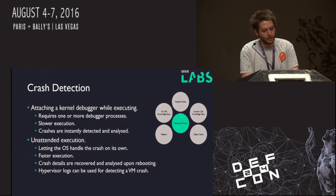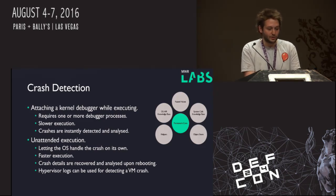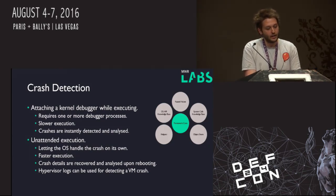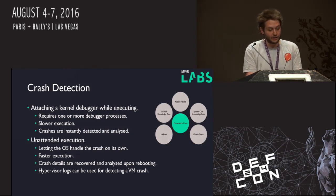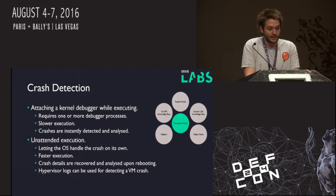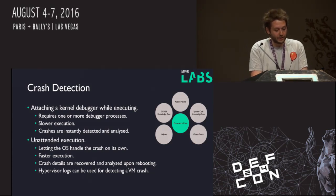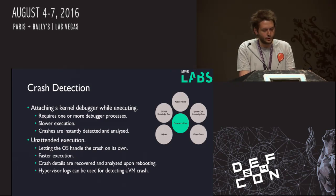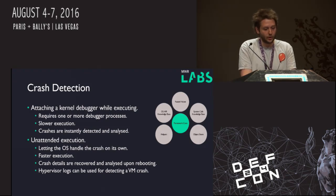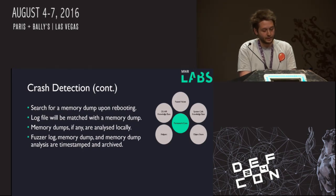Crash detection — there are two methods we tried. The first was just attaching a kernel debugger while executing the fuzzer. This obviously requires one or more debugger processes which slows execution — you can either have the host debugging the VMs or a VM debugging another VM. The plus point is we instantly analyze any crashes we find. The other option is unattended execution: letting the OS handle the crash on its own. Much faster execution, we can run more VMs and have less wasted CPU cycles. We recover and analyze the crashes upon reboot. We've also been looking at using hypervisor logs — VMware will actually log when a host has crashed and there's useful information in there.